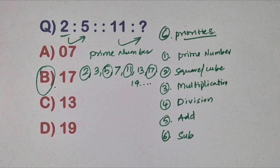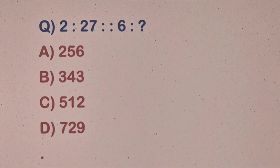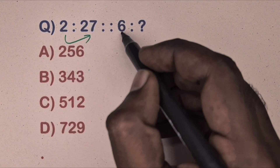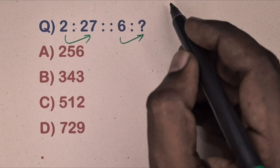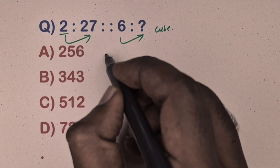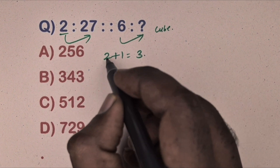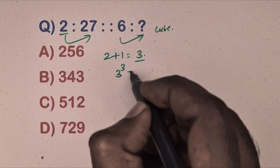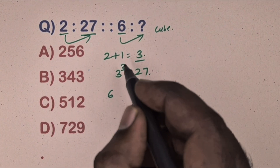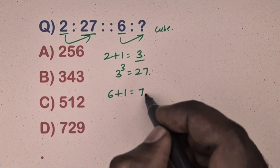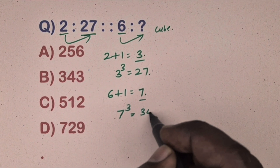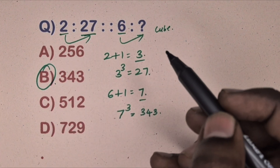Next question: two is related to 27, six is related to which number? Options are given. This is a cube relation. Take two, add one to get three, then three cubed equals 27 — and 27 is there. Same way, take six, add one to get seven, then seven cubed equals 343. So option B is the correct answer.